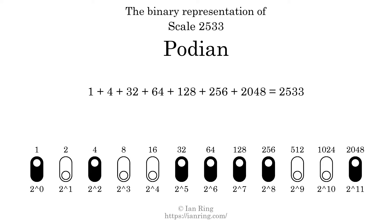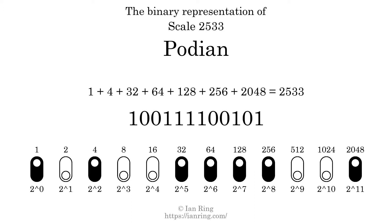The scale number not only enumerates the scale with a unique index, but it also literally describes the tonal content of the scale, represented as a binary number in base 2. The scale number is 1, 0, 0, 1, 1, 1, 1, 1, 0, 0, 1, 0, 1, 1.